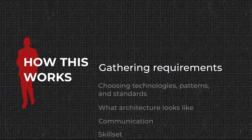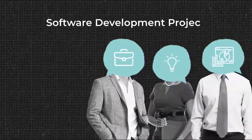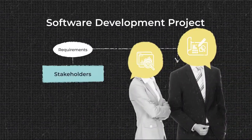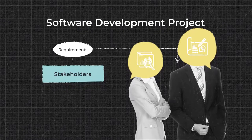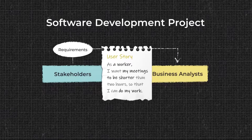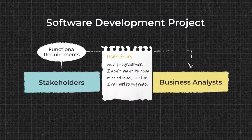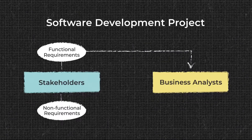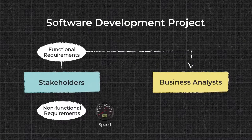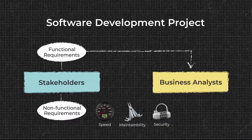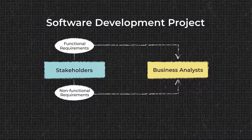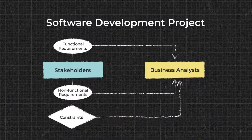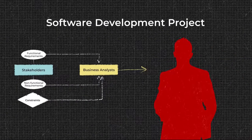Any software development starts with gathering requirements from a diverse group of people — stakeholders, user experience specialists, or even end users. Business analysts are in charge; they document requirements in user stories, short descriptions of product behavior from a customer perspective. These are functional requirements. There are also non-functional ones: the general qualities of software — its speed, maintainability, security, and others. Besides requirements, any project has its own constraints: a budget, manpower, time, licensing, and risks.